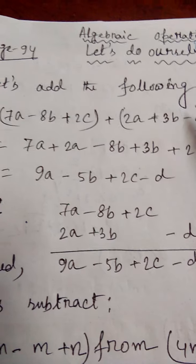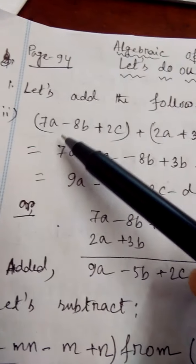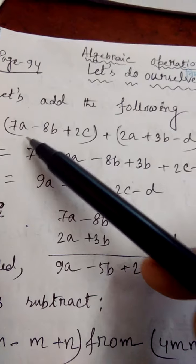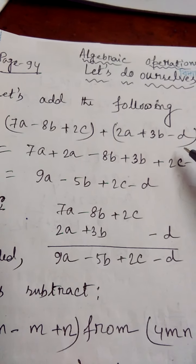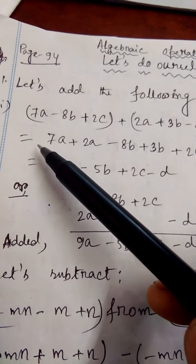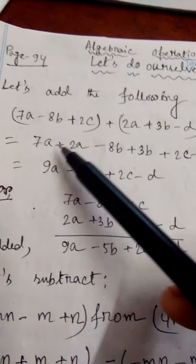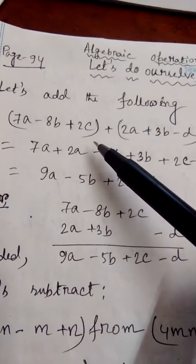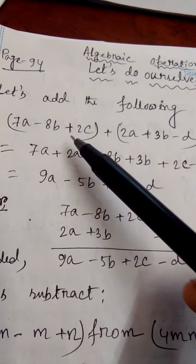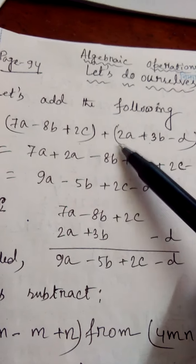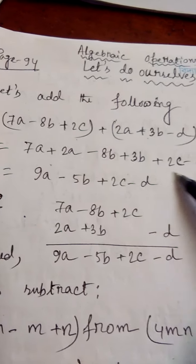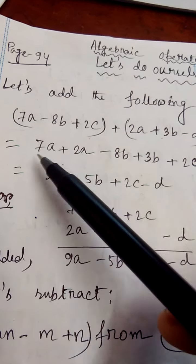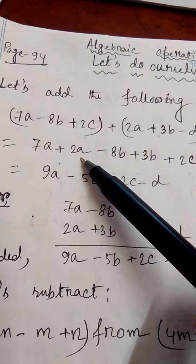Let us add the following. Here are two algebraic expressions: 7a minus 8b plus 2c, and 2a plus 3b minus t. We have to add these two algebraic expressions. I shall get 7a plus 2a minus 8b plus 3b plus 2c minus t. If I remove the first bracket from these two expressions, I shall get these terms. The like terms are 7a plus 2a.